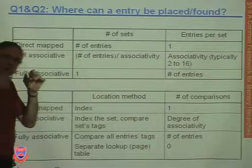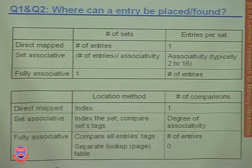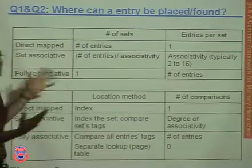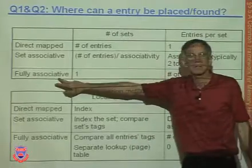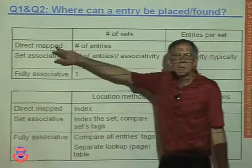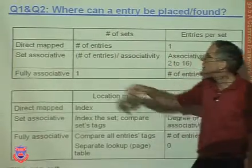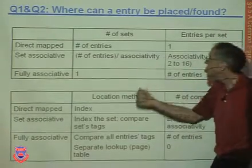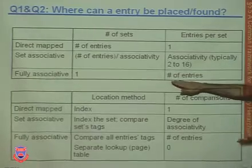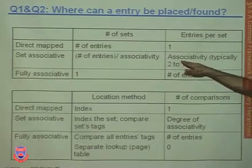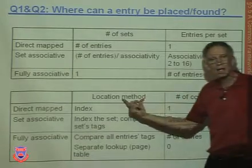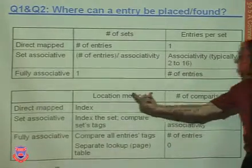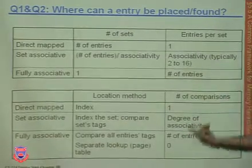Here's a common framework for memory hierarchies. The first question: where can an entry be placed? In a direct map cache, only one location. In a fully associative cache, one large set containing all entries. In an N-way set associative cache, the number of sets equals the total entries divided by the associativity. The second question: how is the entry found? Direct mapped uses indexing and one comparison. Fully associative requires comparing all entry tags — either in parallel hardware or a separate lookup table. Set associative indexes into a set, then compares tags in parallel — requiring as many comparators as the degree of associativity.